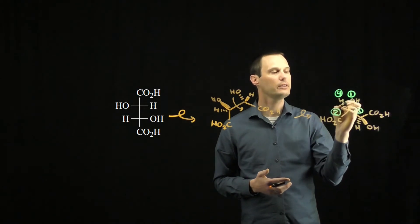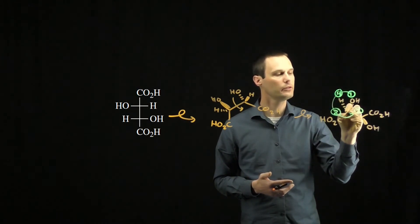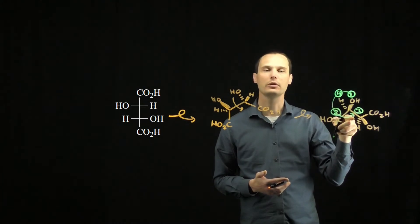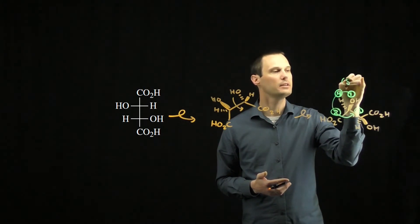Number four is already on a dash. So ignoring number four, I can draw a circle from one to two to three, ignoring four. That is a counterclockwise circle. This stereocenter is an S stereocenter.